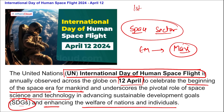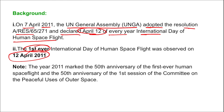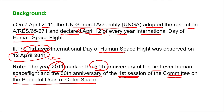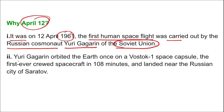The first International Day of Human Space Flight was observed on 12th April 2011. On 7th April 2011, the UN General Assembly adopted the resolution and declared 12th April every year as the International Day of Human Space Flight. The year 2011 marked the 50th anniversary of the first ever human space flight. The reason 12th April is chosen is because on 12th April 1961, the first human space flight was carried out by Russian cosmonaut Yuri Gagarin of the Soviet Union, who orbited the Earth once in the Vostok 1 space capsule in 108 minutes.